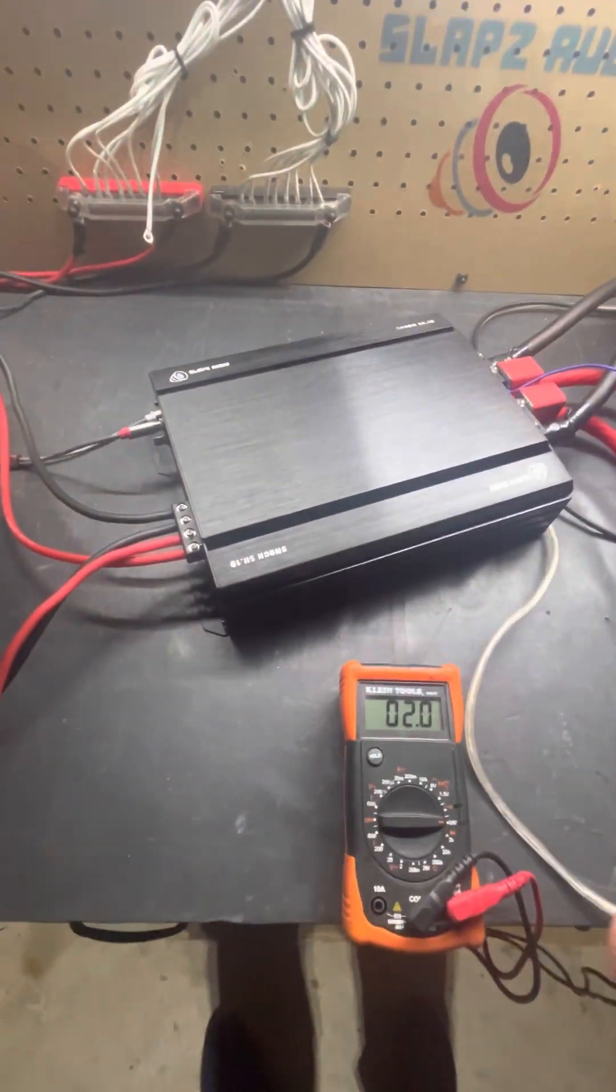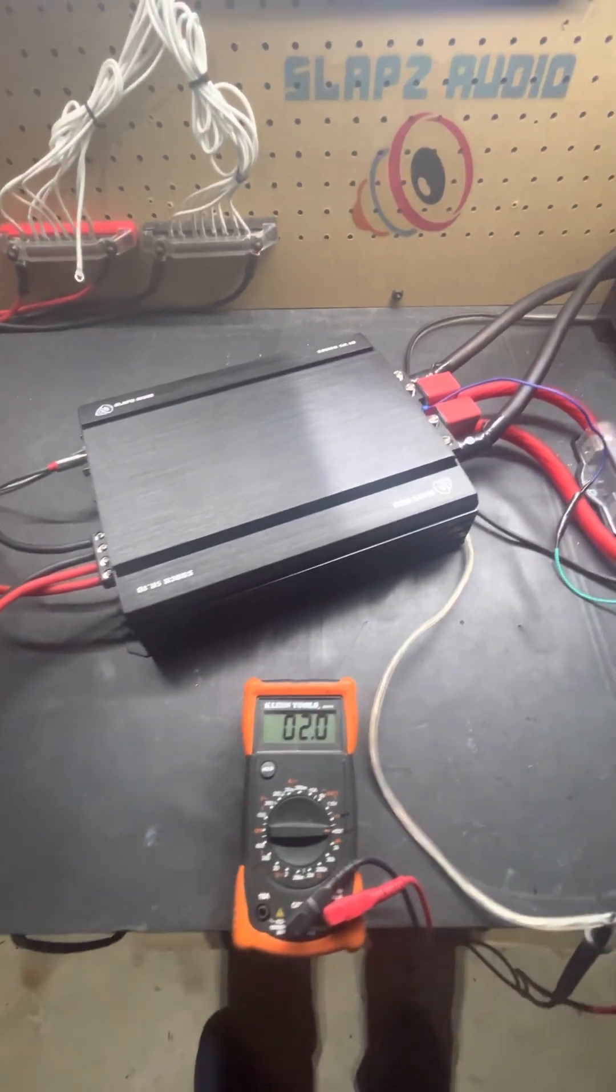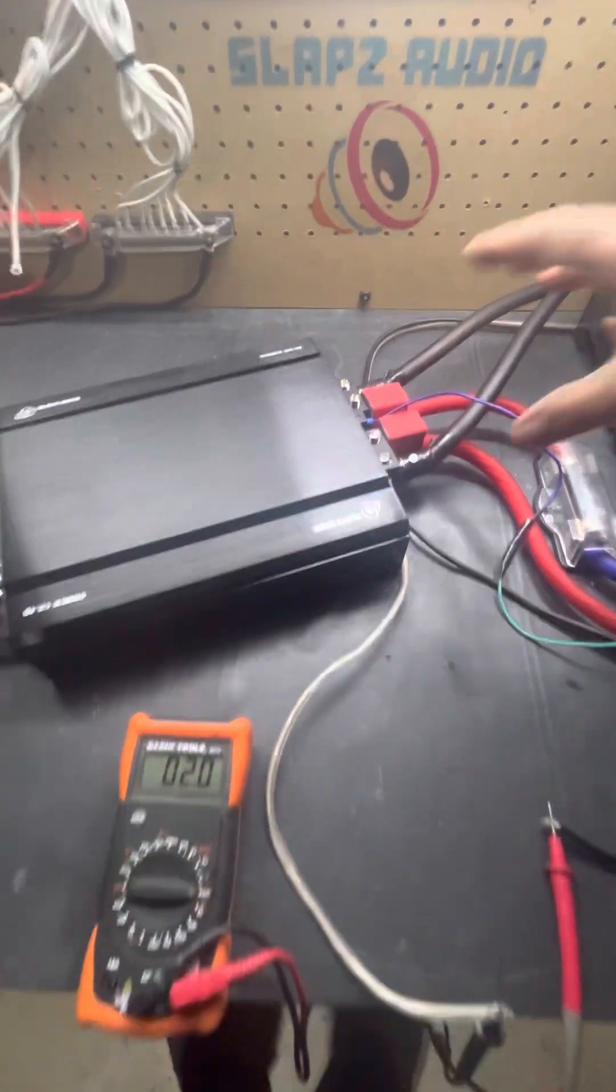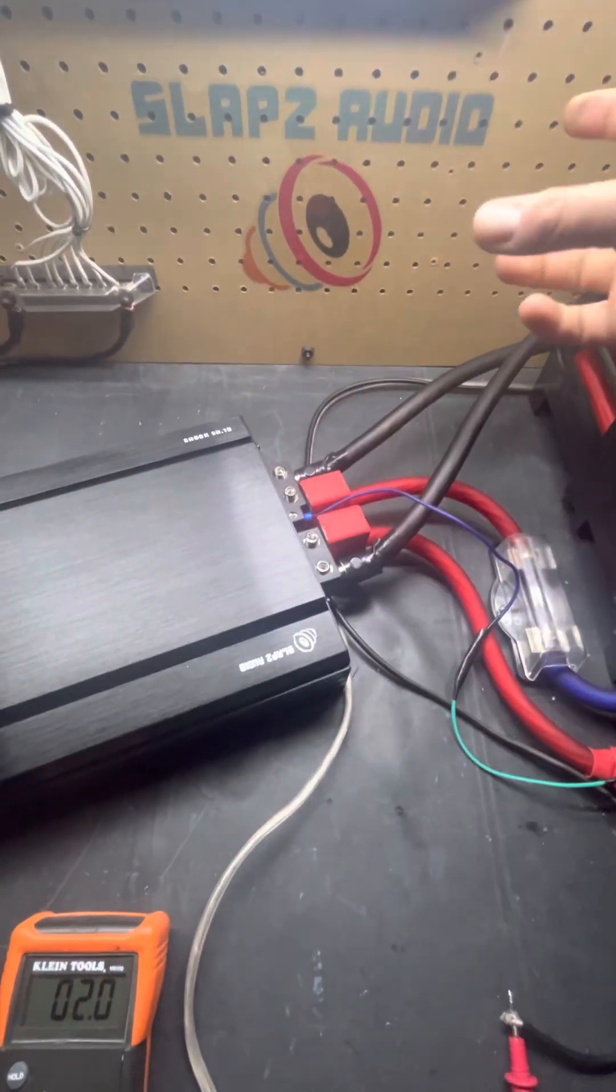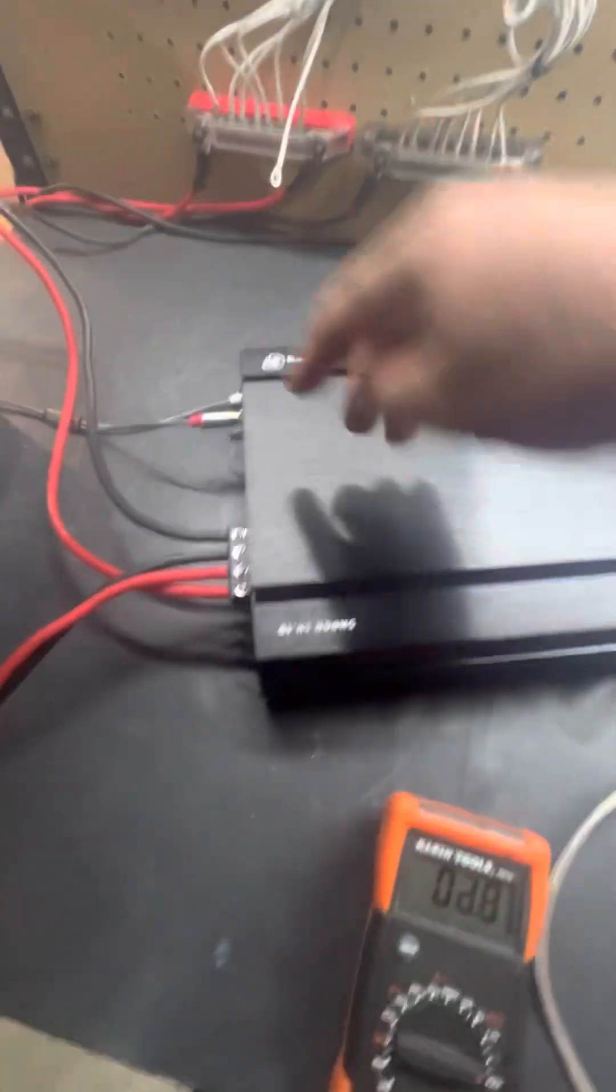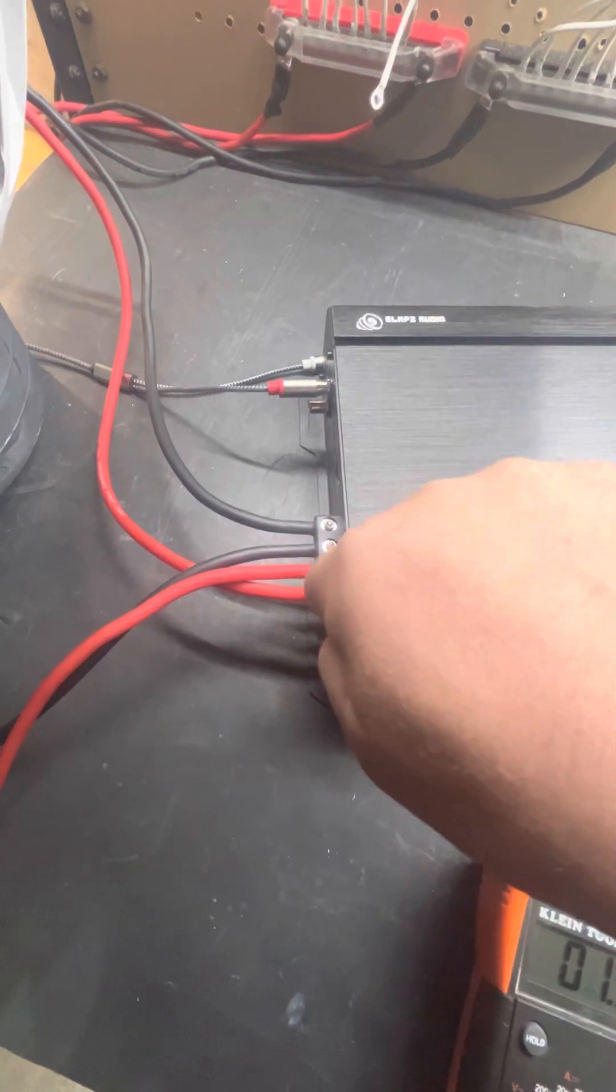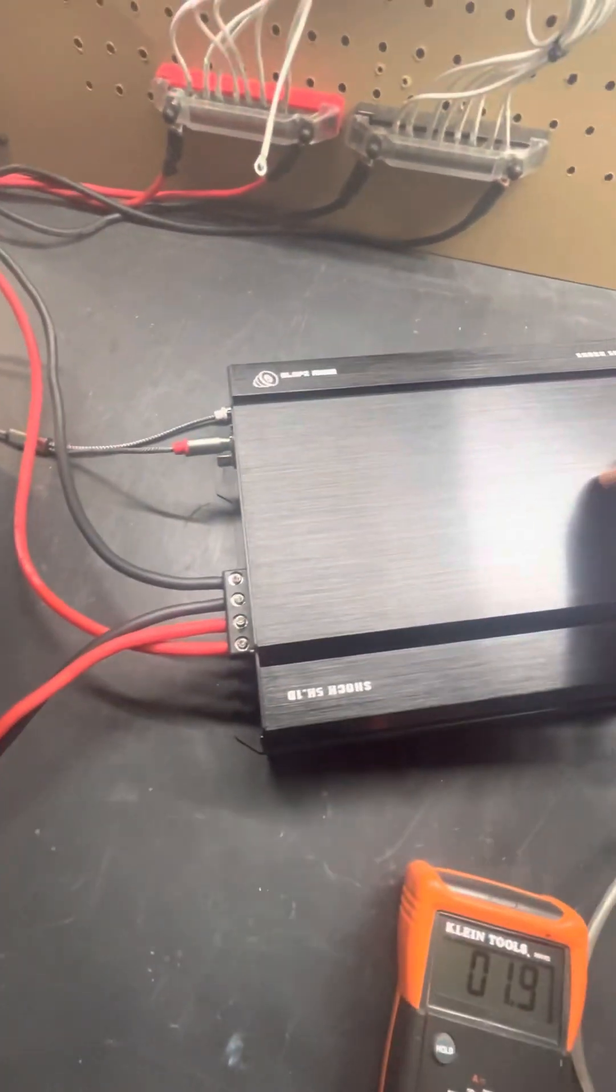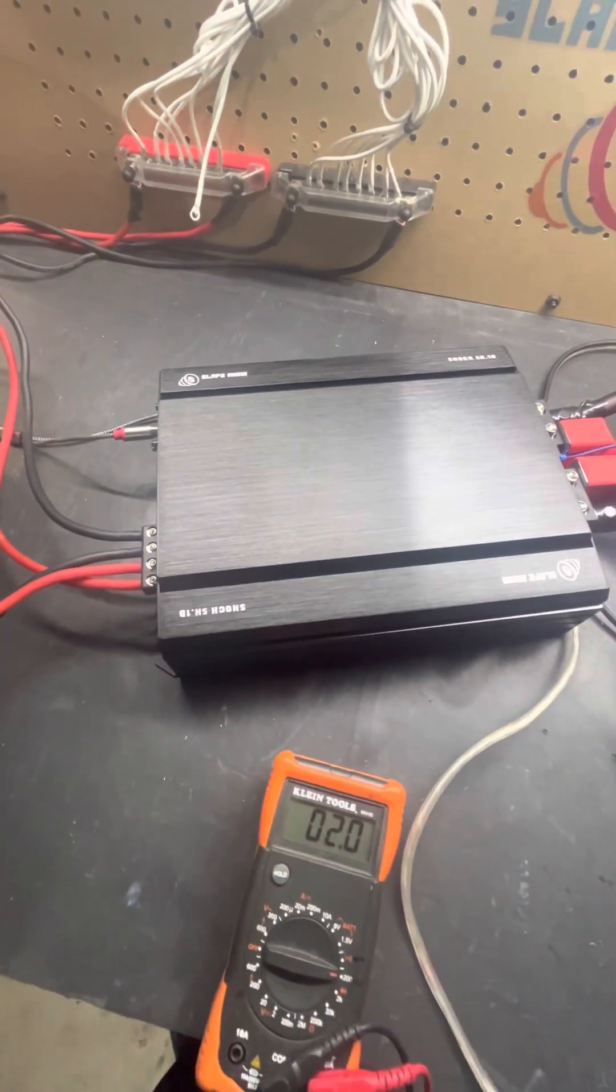When it comes to connecting everything, we always say power everything off. You don't want to have your power connected, the radio on, the amplifier on, and then going to connect your speaker leads. If you touch, you can short out the amp.